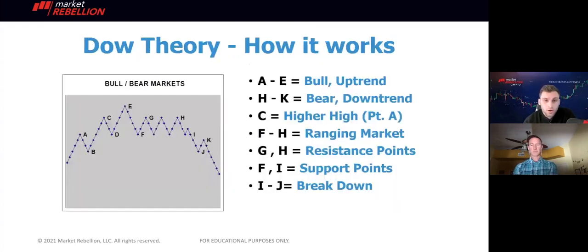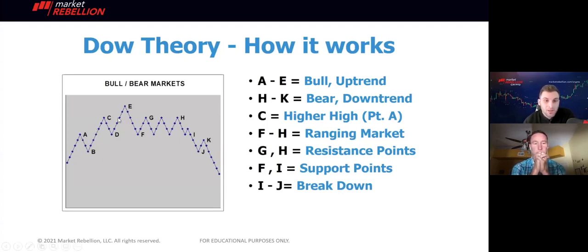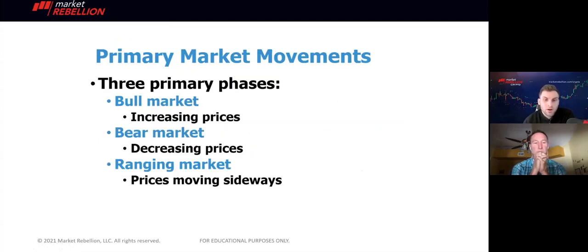How does Dow Theory work? It is essentially a string of movements. We have bulls and we have bears. A bull market refers to increasing prices while a bear market refers to decreasing prices. And within these bullish and bearish moves, we have things like a higher high — which is the highest of the highs — and then some lower trends and downtrends which consist of higher lows or lower highs. There are three primary conditions of markets: bull markets with increasing prices, bear markets with decreasing prices, and ranging markets where prices move sideways.